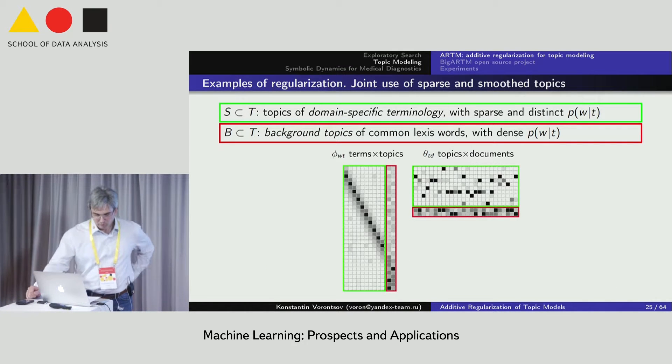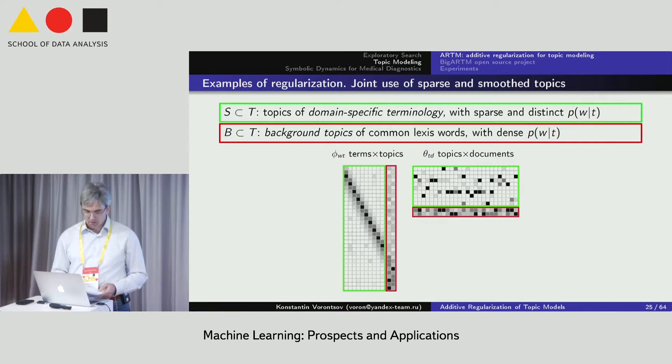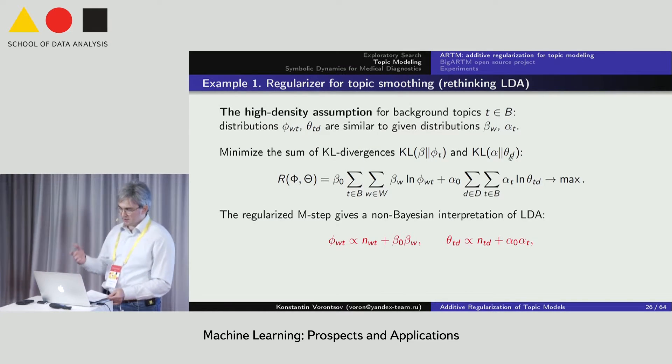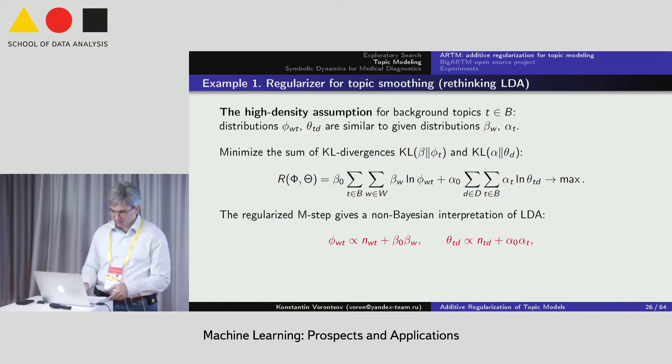For example, we would like to have a well interpretable model with lots of sparse and decorrelated topics containing domain-specific terminology of the problem domain, and a few dense topics containing stop words and common lexical words. To smooth the background topics, we minimize the Kullback-Leibler divergence between the model distribution phi and the fixed distribution beta, and also between model parameters theta and the fixed vector alpha. But this is strictly equivalent to the LDA. This is the same formula of M-step that LDA has.